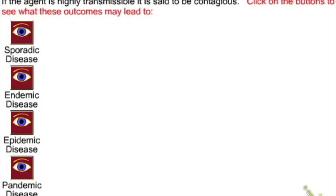A communicable disease that can easily spread is called contagious. Common colds and flu are contagious. HIV is communicable but not necessarily contagious — you can kiss or embrace someone with HIV without contracting it, unless the contact goes beyond that. Unlike chickenpox, which is highly contagious.